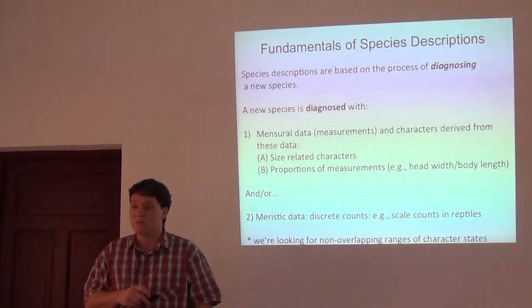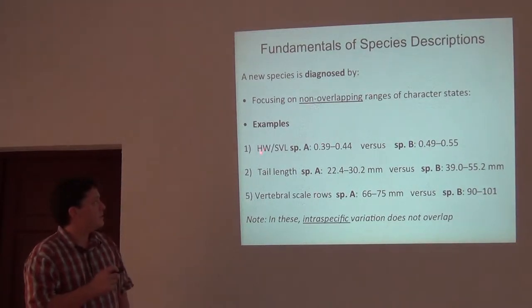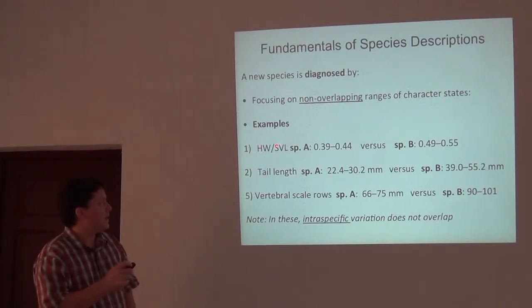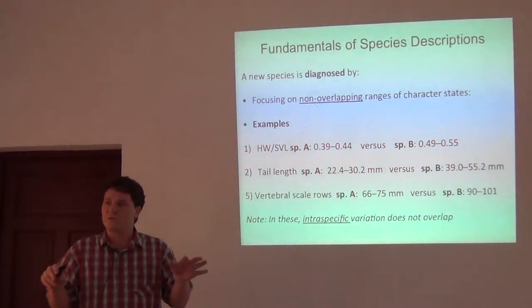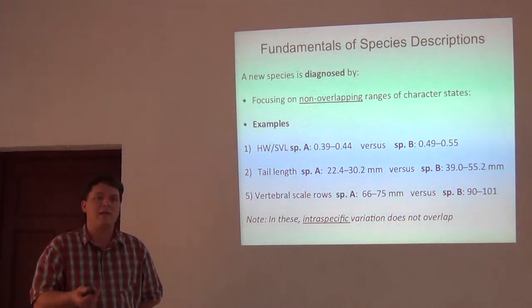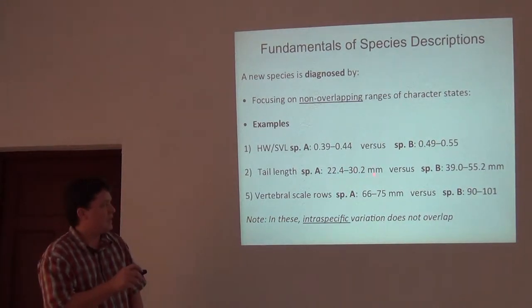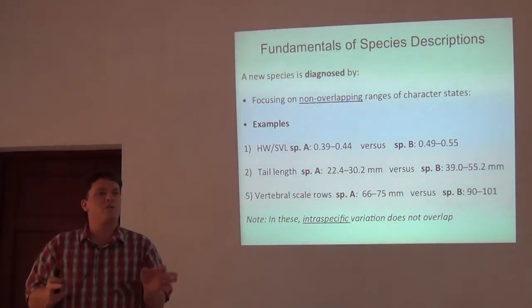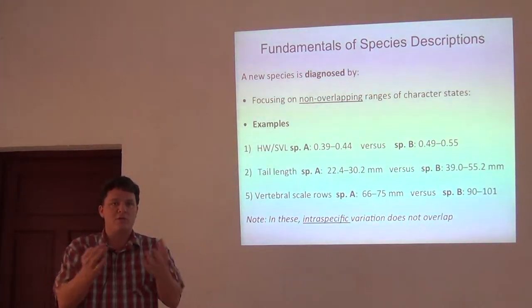Here are some examples focusing on finding non-overlapping ranges of character states. Here's one using proportional data: head width divided by snout-vent length — the relative head size. Species A is 0.39 to 0.40, whereas in species B it's 0.49 to 0.55. Those two ranges don't overlap with each other. Here's another: raw tail length data — species A is 22.4 to 30.2 millimeters and species B is 39 to 52 millimeters. Those are non-overlapping character states, and that's gold for describing new species.